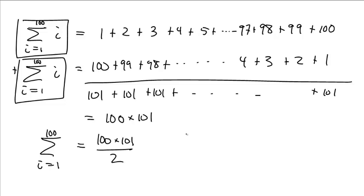And in general, the second formula that we have is i equals 1 up to n of just i is n times n plus 1 over 2 for exactly the same reasons.